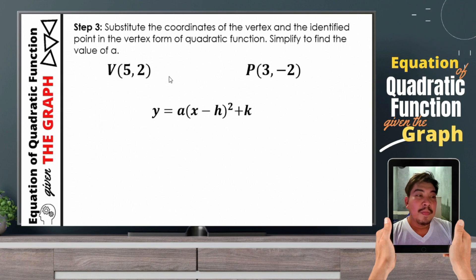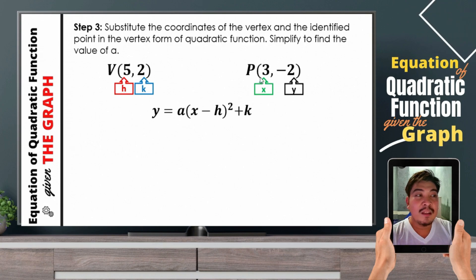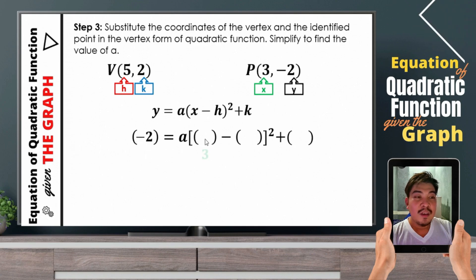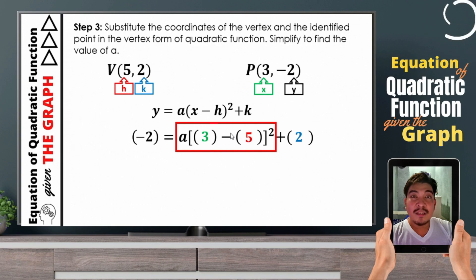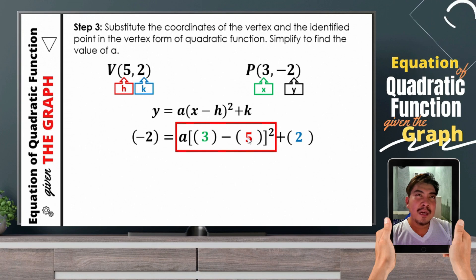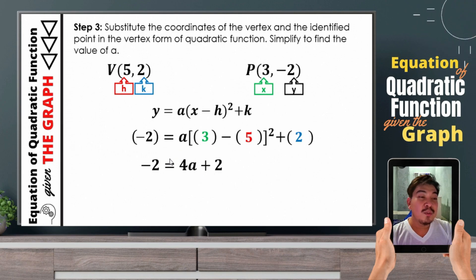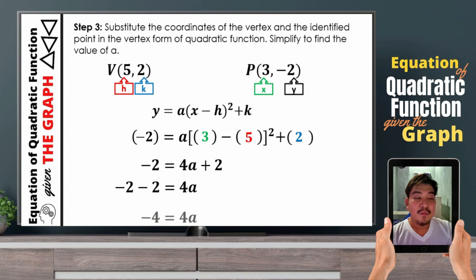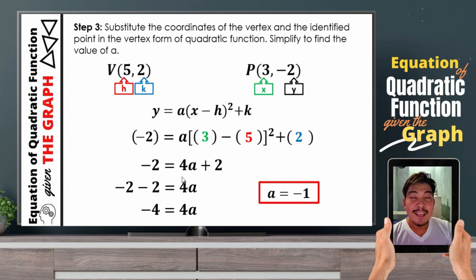So let us do that. The value of h is 5, k is 2. The values of x and y that we are going to use to solve for the value of a will be 3 and negative 2 respectively. Let us now fill in the blanks. The value of y is negative 2, x is 3, minus the value of h which is 5, and the value of k is 2. Let us first simplify what's inside the grouping symbol. 3 minus 5 will become negative 2. Negative 2 squared will become positive 4. 4 times a will be 4a. Therefore, we now have negative 2 is equal to 4a plus 2. Transposing positive 2, we get negative 2 minus 2 is equal to 4a. Negative 2 minus 2 gives negative 4 equals 4a. Dividing both sides by 4, the value of a is equal to negative 1.